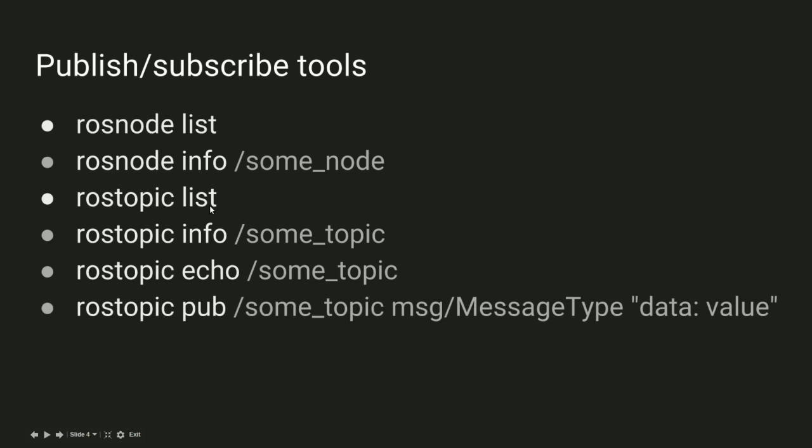Similarly for topics you have rostopic list. This will give you a list of all the topics that are being published or subscribed to. And if you say rostopic info then you'll get all of the nodes that are publishing to that topic and all of the nodes that are subscribed to that topic. Another useful command is rostopic echo which will print out the data that's being published on that topic.